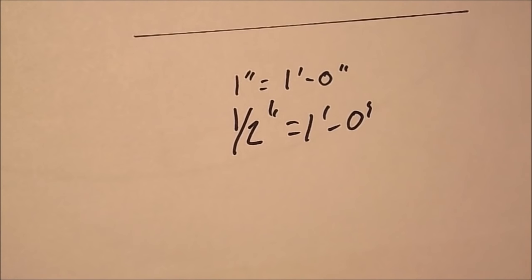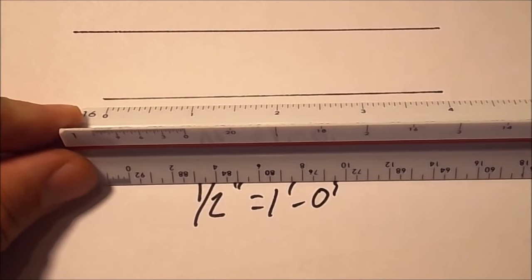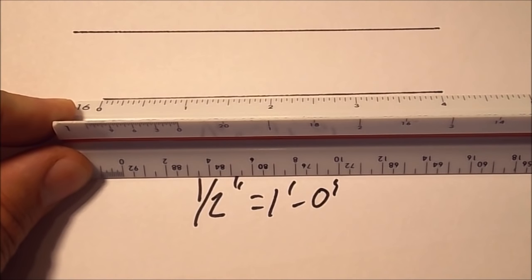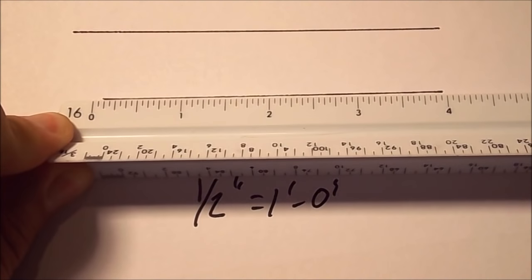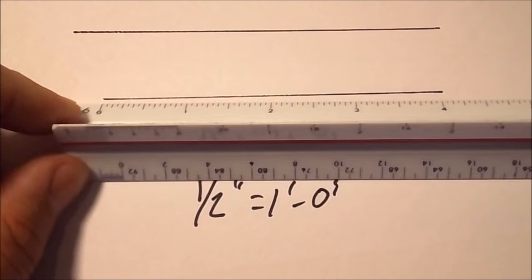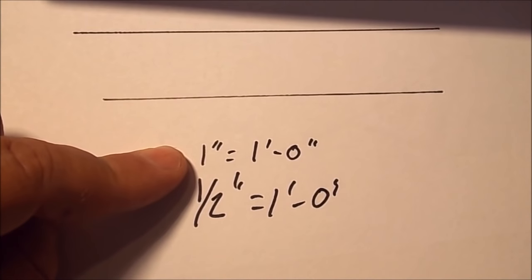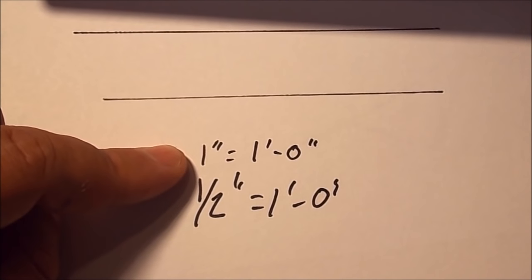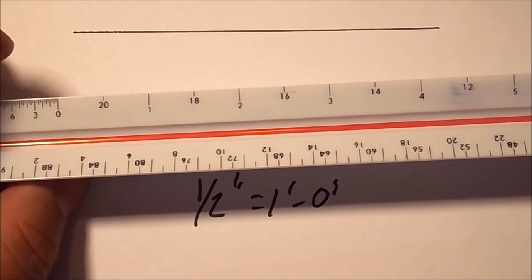We use the scale rule in two different ways. One to measure an existing line like one of these two lines, and then of course to draw lines in scale. I'm just going to throw the actual regular ruler on here so you can see that this first line is actually four inches long in real scale. I'm going to flip over to the one inch scale and measure this line as if it were in one inch equals one foot zero inches, which means every inch on the paper equals one foot in full scale.